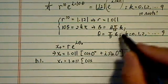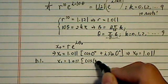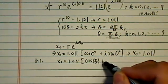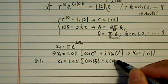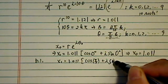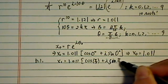cosine of, for this one, when k equal to 1, we have pi over 5, which is really 36 degrees, plus i sine of pi over 5.